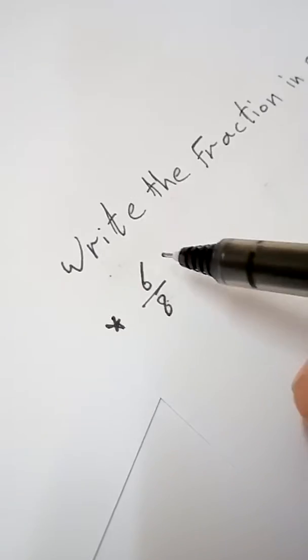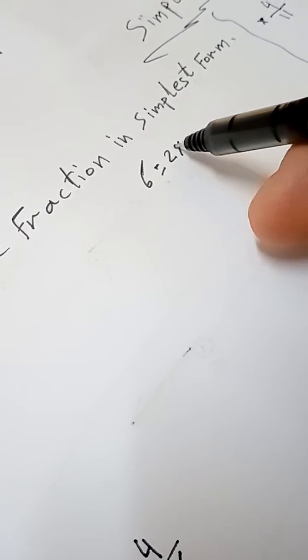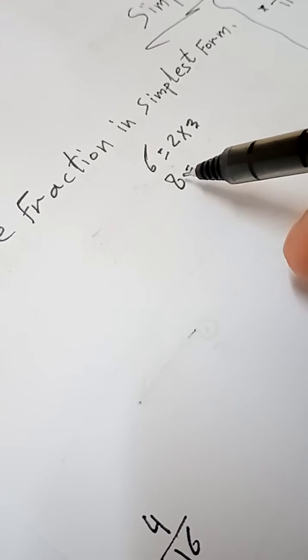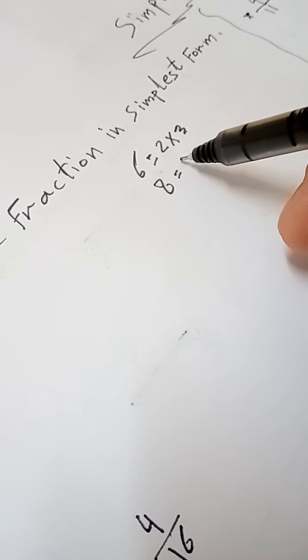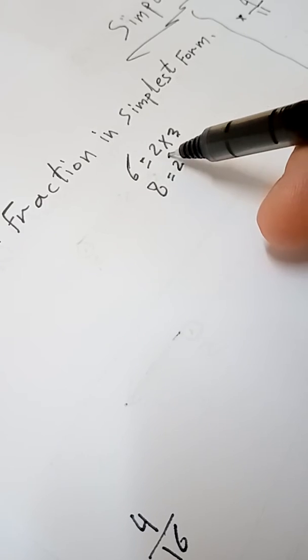Let's look at these examples. The first question: write the fraction 6 over 8 in simplest form. First, take 6 and find its prime factors — 6 equals 2 times 3. Then take 8 — 8 equals 2 times 4, and 4 equals 2 times 2, so 8 equals 2 times 2 times 2, which I can write as 2 exponent 3.